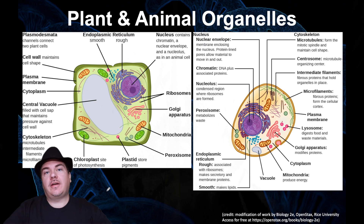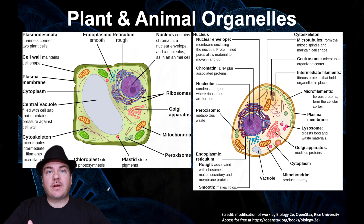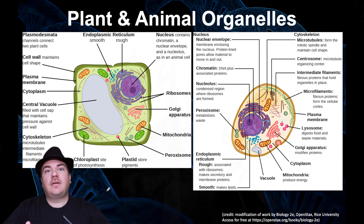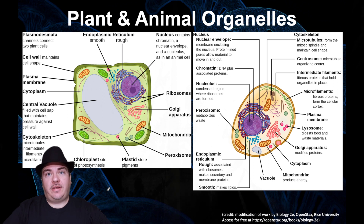Dr. Sage here. Now what we're going to do is start learning about all the different organelles inside eukaryotic cells. Examples of eukaryotic cells are things like animal cells and plant cells.